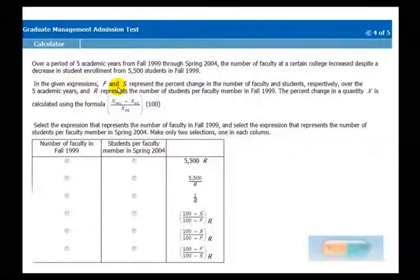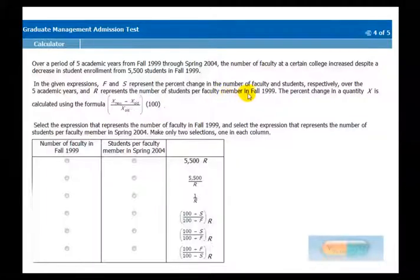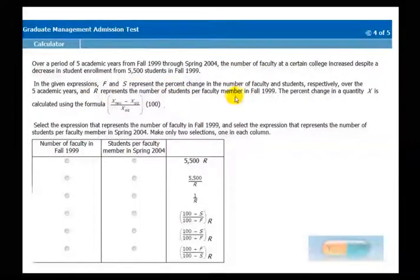In the given expressions, F and S represent the percent change in the number of faculty and students respectively over the five years. So you know that these are percent changes from 99 to 04. Now, R represents the number of students per faculty member. So this is a ratio. R represents a ratio that happened in one specific year whereas F and S are changes that happen between the two years.